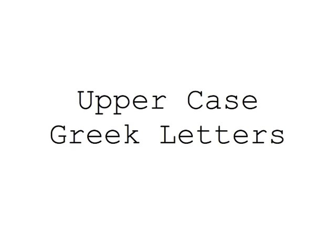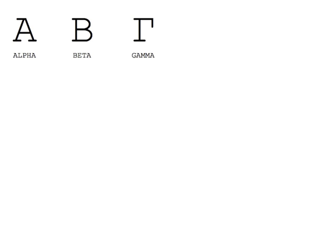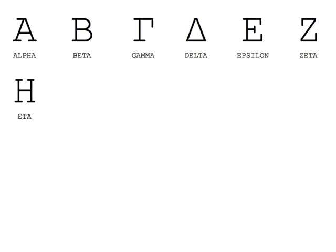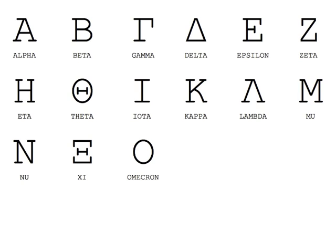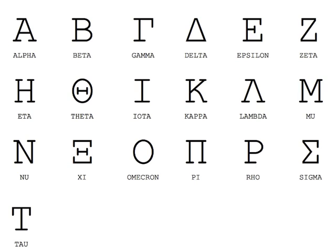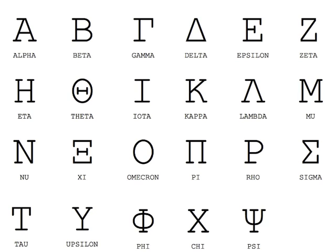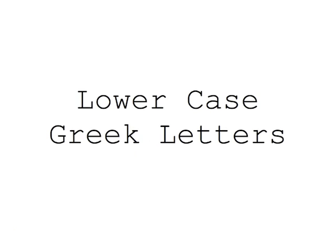First, let's take a look at the uppercase Greek alphabet, one letter at a time: alpha, beta, gamma, delta, epsilon, zeta, eta, theta, iota, kappa, lambda, mu, nu, xi, omicron, pi, rho, sigma, tau, upsilon, phi, chi, psi, omega.